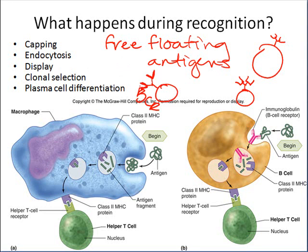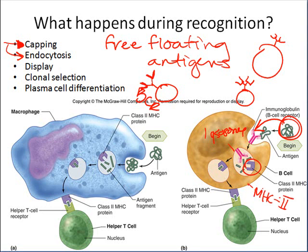We have millions of differently shaped B cells monitoring the fluid moving past them, looking for potential antigens. If they identify a free-floating antigen, they will endocytose it — first it sticks to the surface of the plasma membrane, which is called capping, then they pull it in through endocytosis, fuse it with a lysosome to digest that antigen into little bits and pieces, and then install it in an MHC II protein.